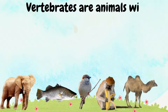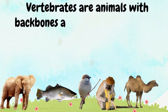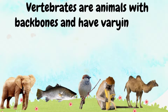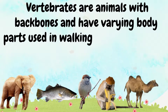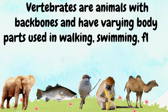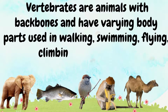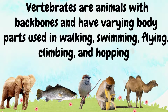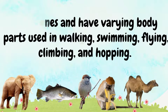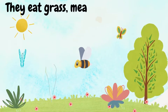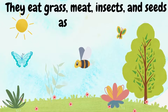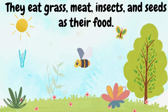Vertebrates are animals with backbones and have varying body parts used in walking, swimming, flying, climbing, and hopping. They eat grass, meat, insects, and seeds as their food.